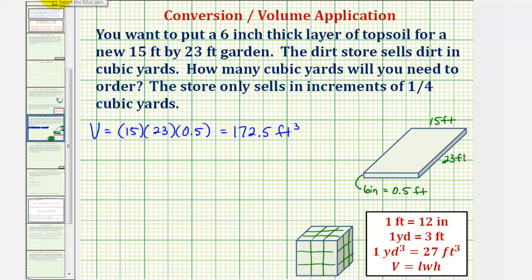So to do this conversion, we'll use a unit fraction. We'll write the given volume as 172.5 cubic feet over one. We'll multiply by a unit fraction to convert the units to cubic yards. We're going to eliminate cubic feet, so we'll put cubic feet in the denominator, and cubic yards in the numerator.